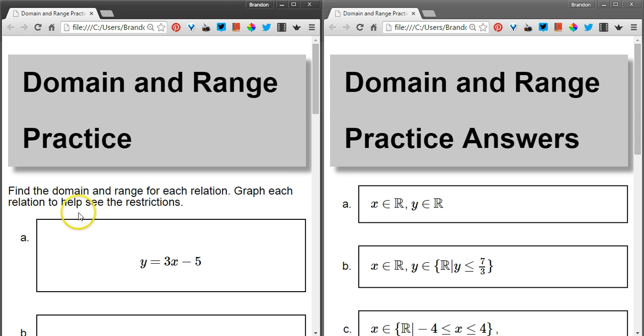The domain, that's the set of all x values or independent variable values that you can put into the equation. And the range is the set of all things you can get out, the y values or dependent variable values. I've given a bunch of questions and answers here and I'm going to show you how to get from question to answer.